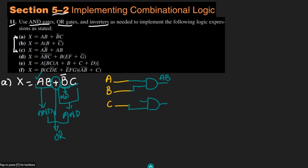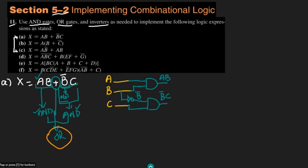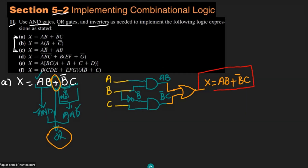For the other AND gate, one input is C while the other input is B complement. To get B complement I complement B using the NOT gate. So the output of that AND gate is B complement C. Finally, these two results AB and B complement C are combined together by a two-input OR gate, giving the output X equal to AB plus B complement C.